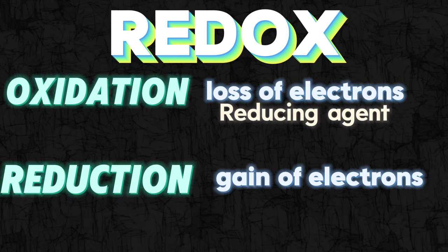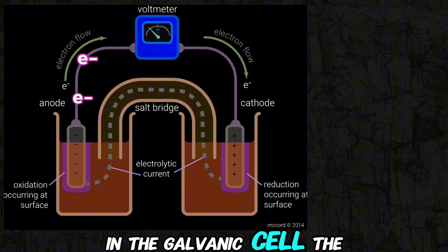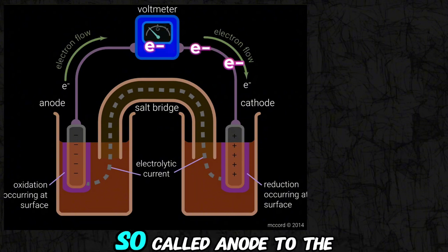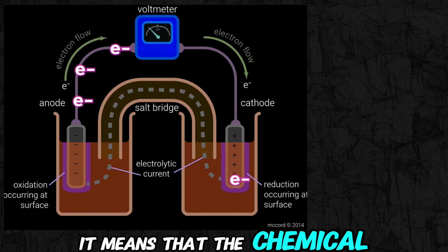This brings us to the galvanic cell. In the galvanic cell, the electrons will move from a so-called anode to the cathode. It means that the chemical which is in the left side will be oxidized, and the chemical which is in the right side will be reduced.